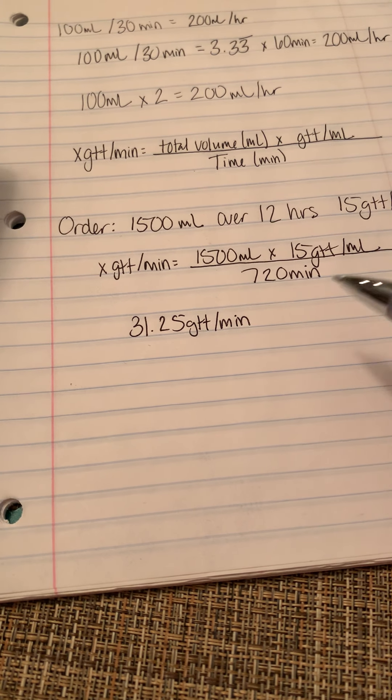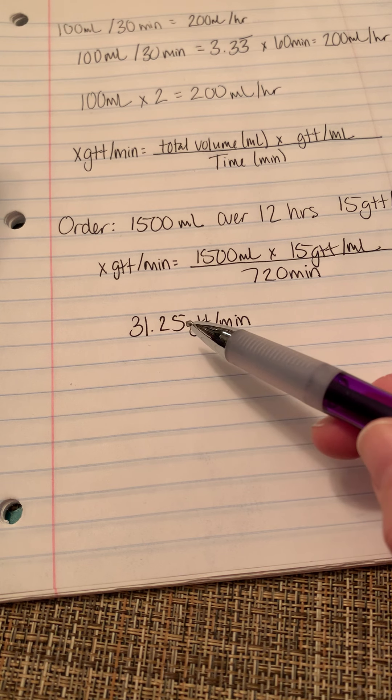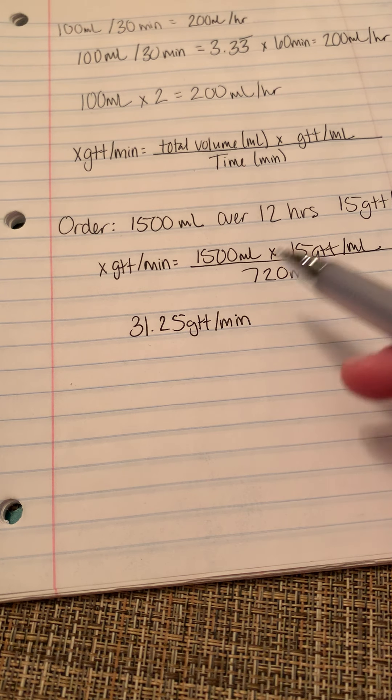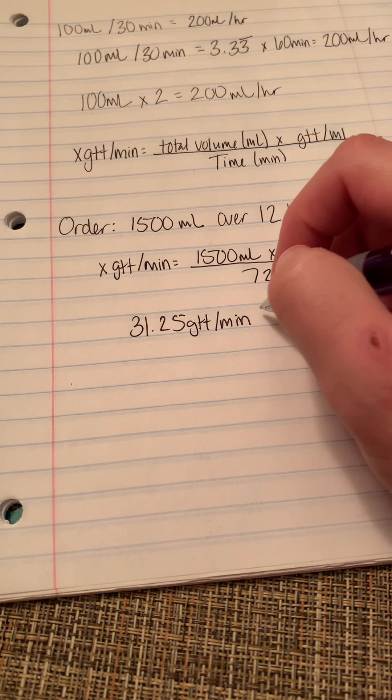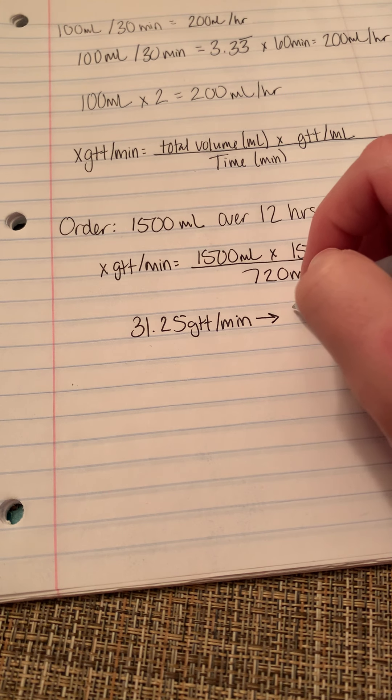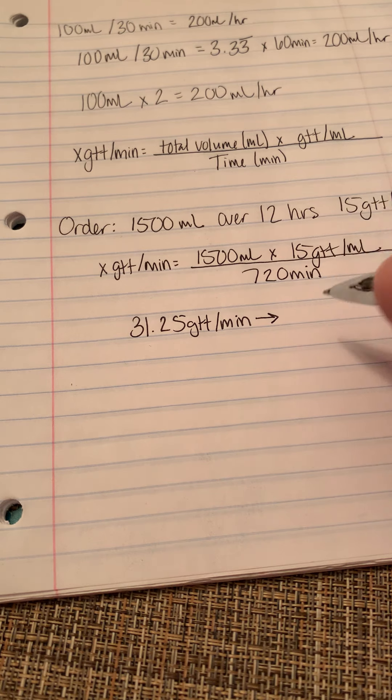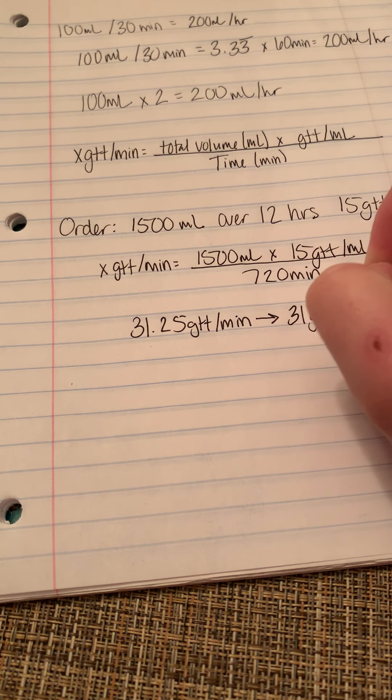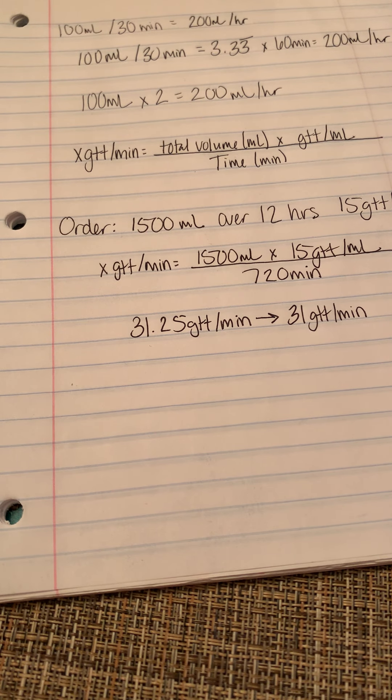Now, if you can imagine giving 31.25 drops per minute, 0.25 of a drop is going to be incredibly difficult. I believe it's probably actually impossible. So we're going to round that. Every drops per minute has to be a whole number. So you're going to get 31 drops per minute as your final answer.